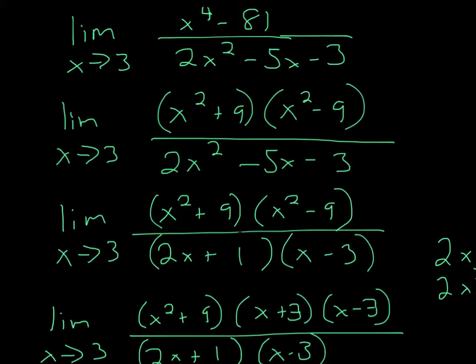We can factor this out, and we'll get x squared plus 9, x squared minus 9. And then, we'll factor the denominator, and when you factor that, you'll get 2x plus 1, x minus 3.